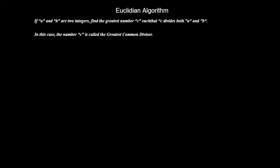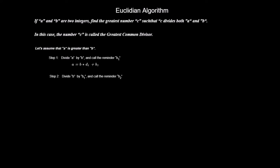When applied to natural numbers, the best implementation of this process is known as the Euclidean algorithm. The problem can now be restated: if A and B are two integers, find the greatest number C such that C divides both A and B. In this case, the number C is called the greatest common divisor.